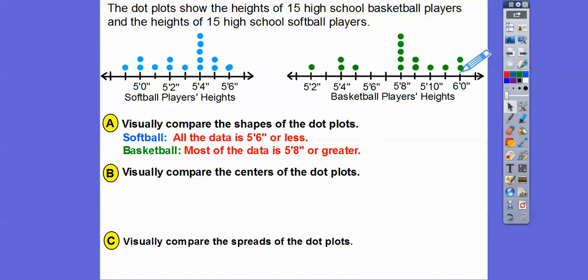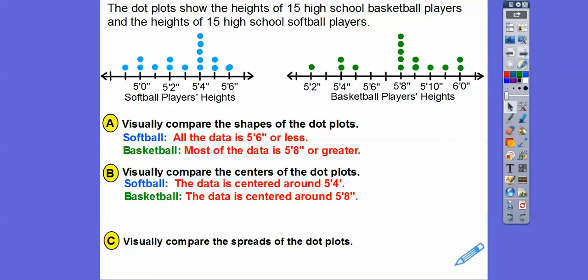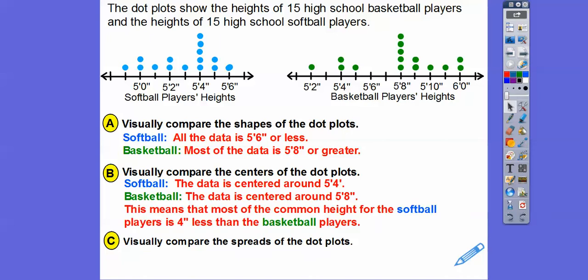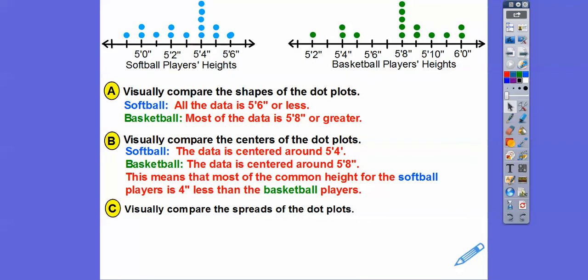Compare the centers of the dot plots. The softball center is at 5'4" and the basketball center is at 5'8". Remember, center is the median. That means the most common heights for softball players are about 4 inches less than the basketball players — which makes sense.